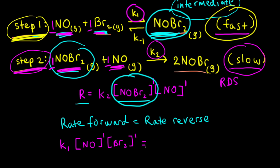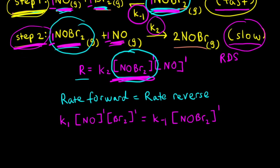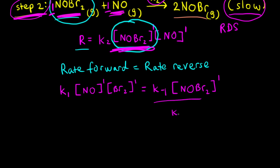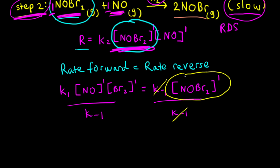We set the rate of the forward reaction equal to the rate of the reverse reaction. The reverse reaction has rate constant K-1, and involves only NOBr2 with a coefficient of one, so its rate is K-1 times the concentration of NOBr2 to the first power. Dividing both sides by K-1, we get that the concentration of NOBr2 equals K1 times [NO] times [Br2] divided by K-1.